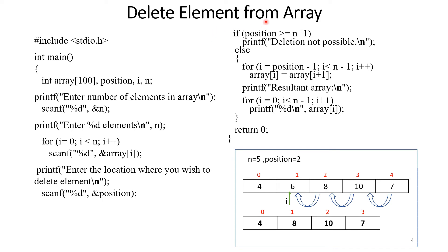The next program is to delete an element from an array. In this example, size n is 5, so the array has 5 elements from index 0 to 4. Position equals 2, meaning we delete the element at the second position, which corresponds to the first index in the array. We delete this element by shifting data to the left: shift 8 to index 1, then 10 to index 2, then 7 to index 3. The size of the array decreases by 1.